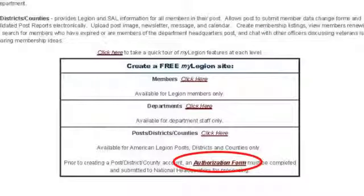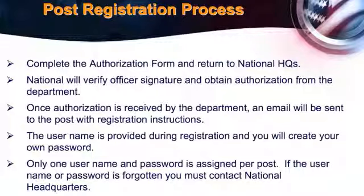What you do is go to the bottom of that page, click on the authorization form, fill it out, and fax it to National. They'll send a request to me saying John Doe, post commander 123, wants access to it. I'll verify that John Doe is the commander, and they'll give you permission to access that database.